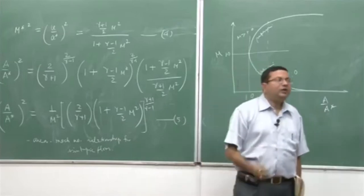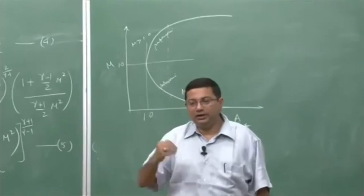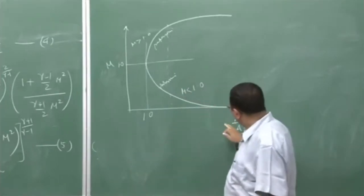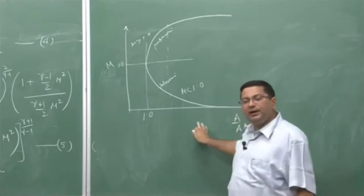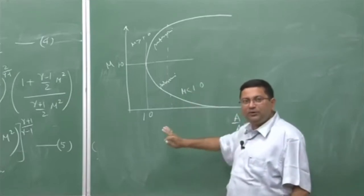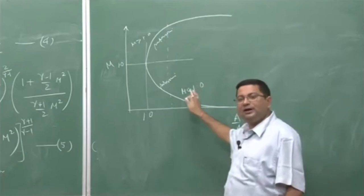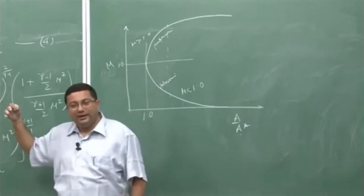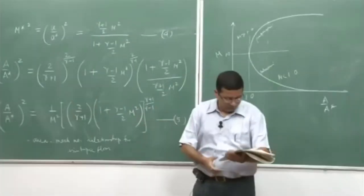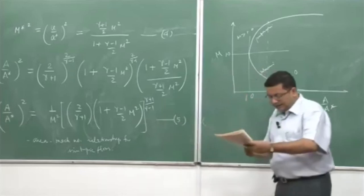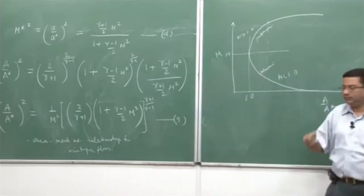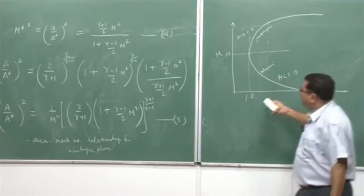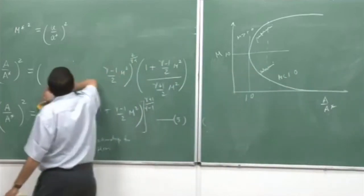What kind of flow will exist depends on what kind of boundary conditions we have. The next thing we are going to discuss are these boundary conditions. What we have established is that for a given value of A/A*, there are two possible solutions — one subsonic and one supersonic. Next, we are going to discuss how this flow is established, whether subsonic or supersonic. For that, let us consider once again a converging-diverging nozzle.